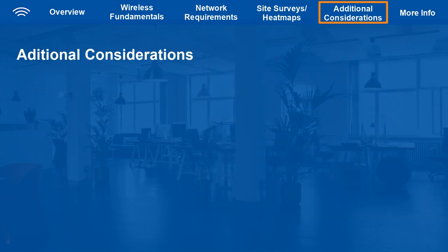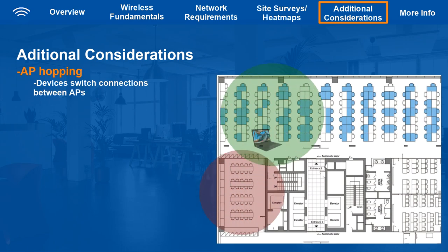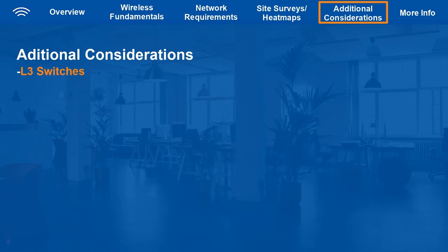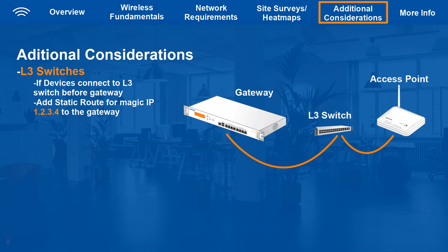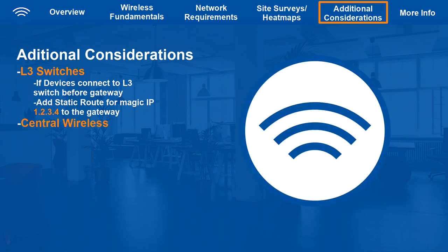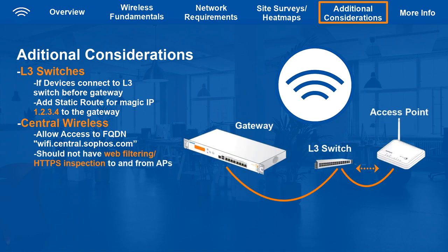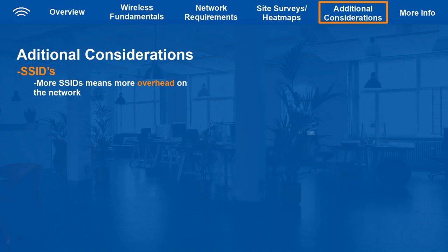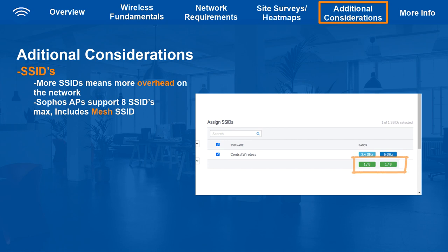Now let's cover some additional considerations directly from Sophos support engineers. If you find a section of your site where devices AP hop, increasing transmit power for one AP or decreasing it for the other may be an acceptable solution. If your APs don't connect directly to the gateway and go via a layer 3 switch, create a static route for the Magic IP 1.2.3.4 and route to the gateway. If using Sophos Central Wi-Fi, allow access to the FQDN wifi.central.sophos.com, and ensure no web filtering or HTTPS inspection is applied to traffic to or from the AP, as this causes problems with Sophos Cloud Wi-Fi registration. Be careful adding too many SSIDs — more SSIDs means more overhead and management frames, which could impact performance. Each AP can handle a maximum of eight SSIDs, including the mesh SSID if mesh is in use.